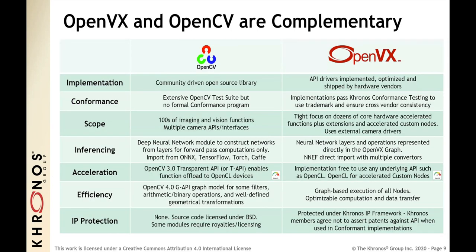A very common question is how does OpenVX compare to OpenCV? OpenCV is an extensive open source library of computer vision functions — a tremendous industry resource, very often used for research projects and prototyping. As an open source library, it's complementary to OpenVX, which is an API standard to enable processor vendors to ship optimized silicon drivers. OpenVX enforces conformance testing across different vendors to ensure cross-vendor reliability and consistency. Both OpenCV and OpenVX can use Khronos's OpenCL for low-level acceleration, and both include inferencing operations. OpenVX has a tighter integration of neural networks and custom accelerated nodes into its graph architecture, and is protected by the Khronos IP framework, ensuring all parts of the specification are guaranteed to be royalty-free.